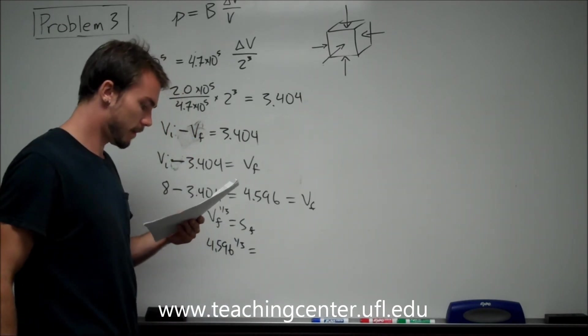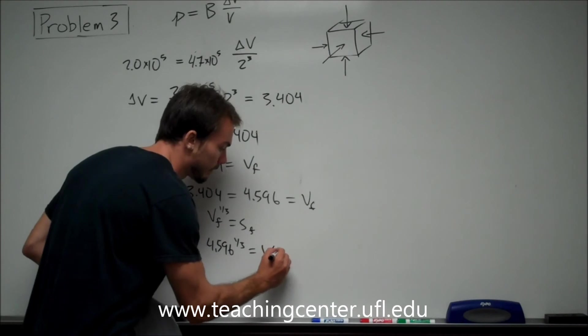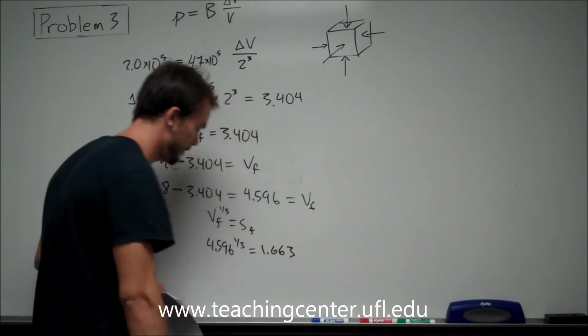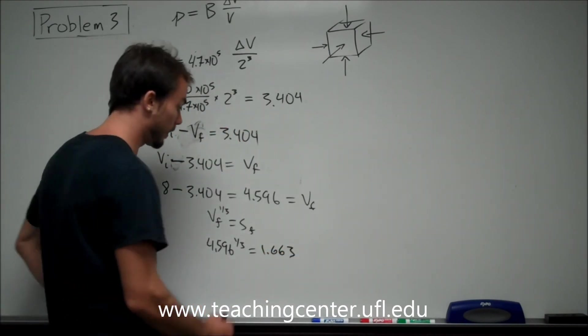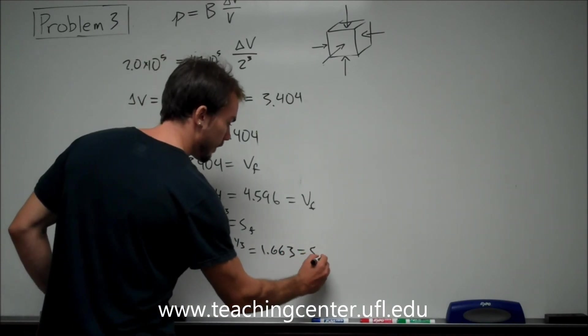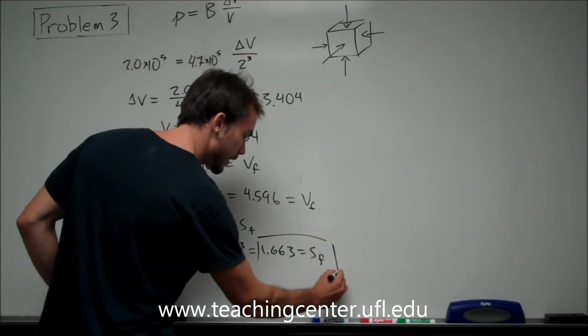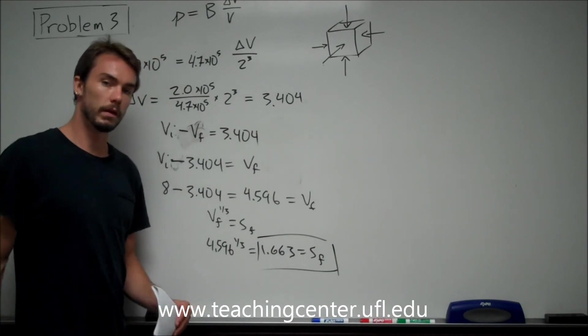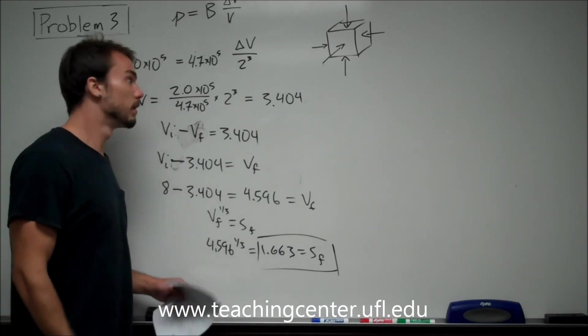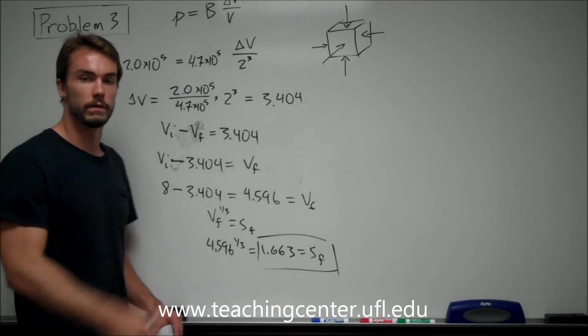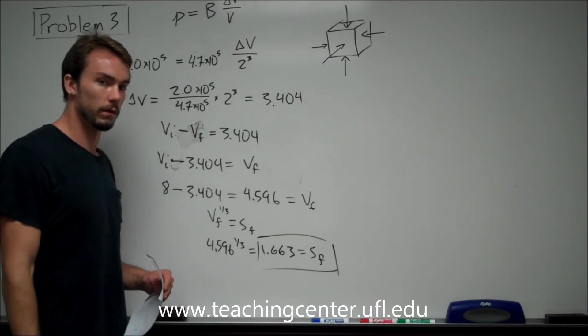And 4.596 to the power one-third gives us 1.663, which is choice number one, 1.66. So this is the length of the sides of the cube, each side, once it is subjected to this pressure, given a material with this particular bulk modulus, 4.7 times 10 to the fifth, newtons per meter squared.